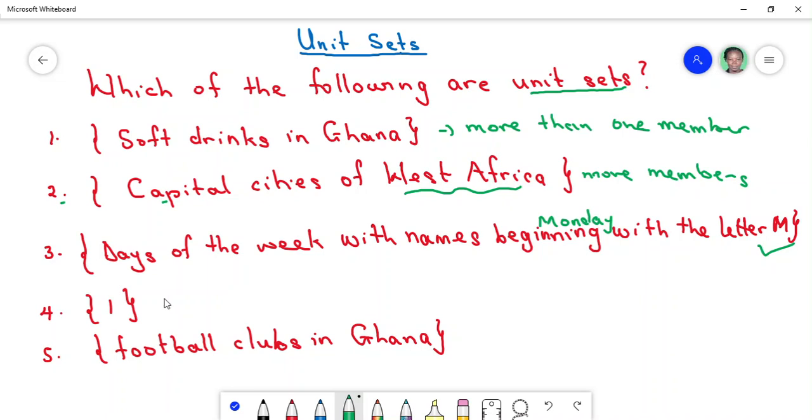It has only one member, which is Monday. If I take number four, what will you say about four? Is four a unit set? Why? Because it has just one member.